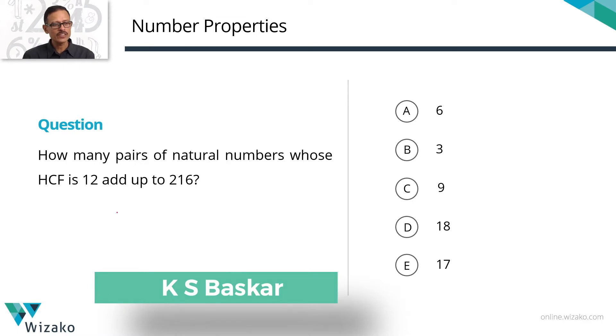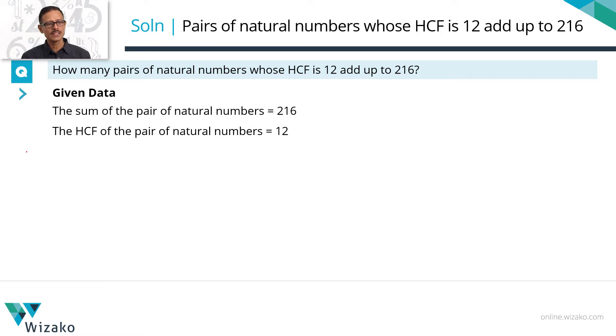How many pairs of natural numbers exist whose HCF is 12 and add up to 216? We need to find pairs of positive integers that satisfy two conditions. The first condition is the sum of those two numbers should be 216. Second condition is the HCF of those two numbers should be 12.